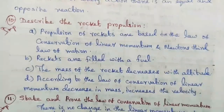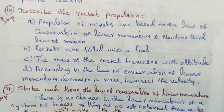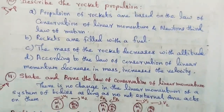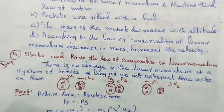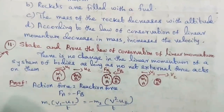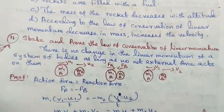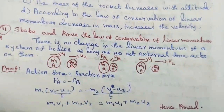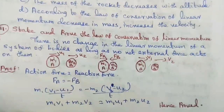Question number eleven, important detailed question: state and prove the law of conservation of linear momentum. Statement: there is no change in the linear momentum of a system of bodies as long as no net external force acts on them. See the diagram. Proof: action force equals reaction force, FA = −FB. Then m1(v1 − u1)/t = −m2(v2 − u2)/t, which gives m1·v1 + m2·v2 = m1·u1 + m2·u2. Hence proved.